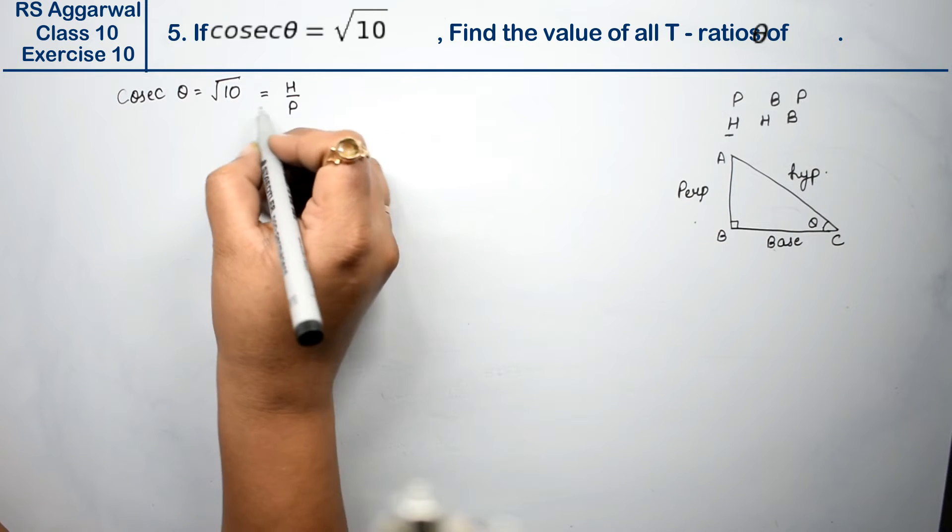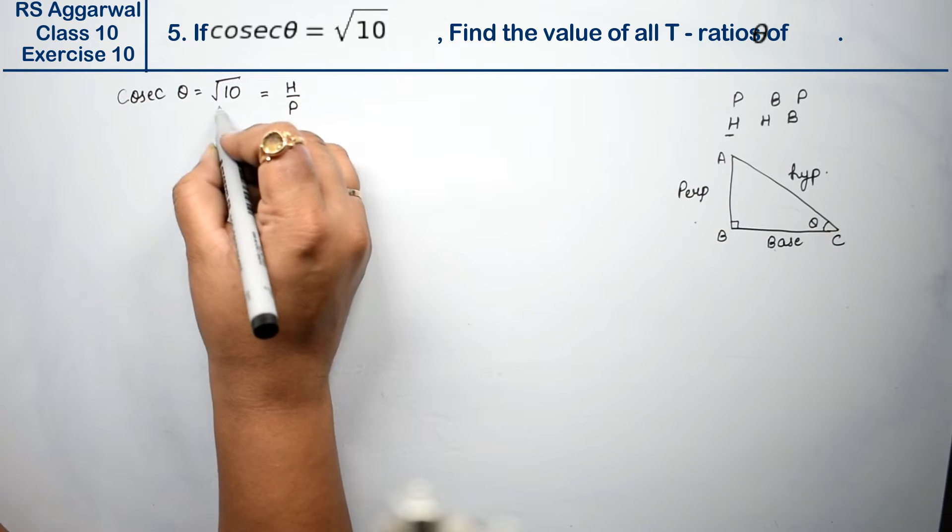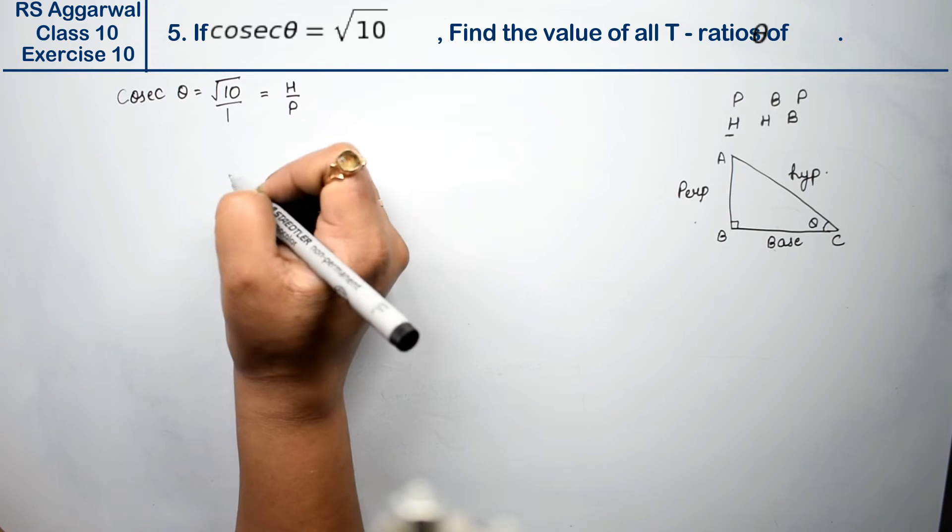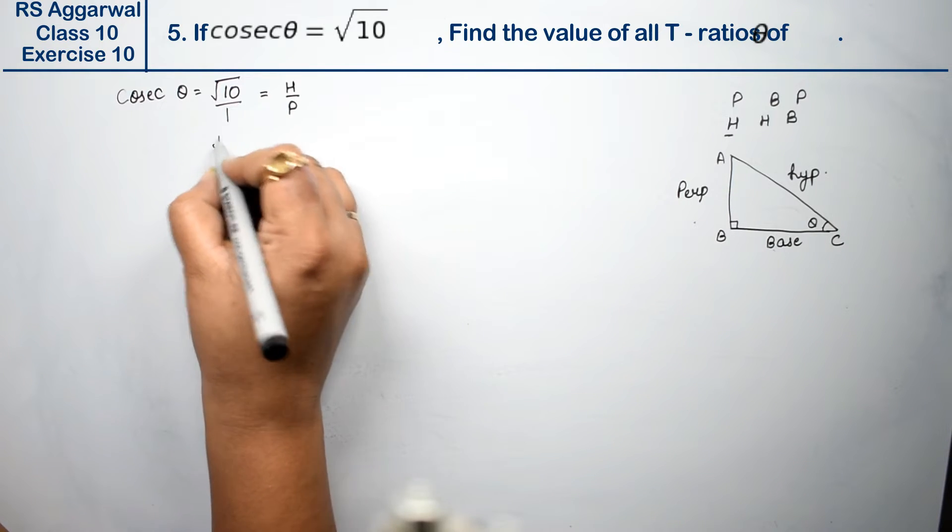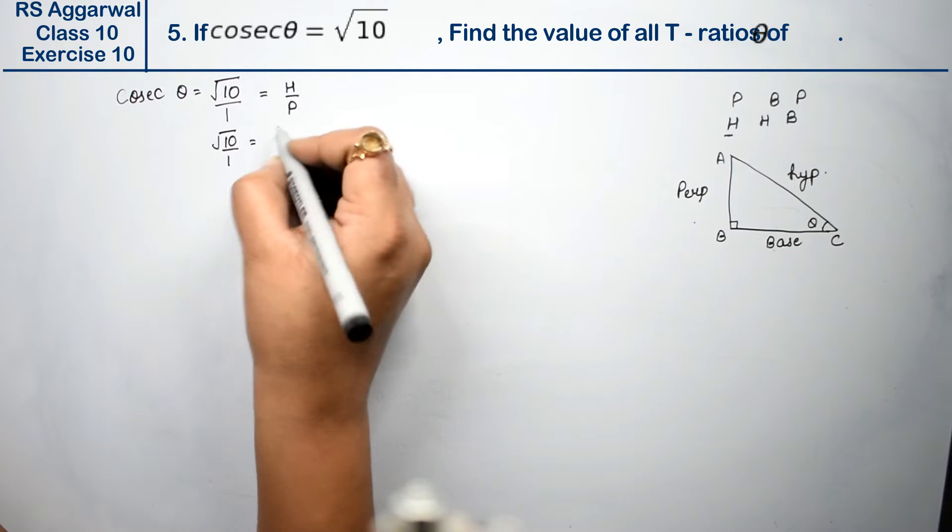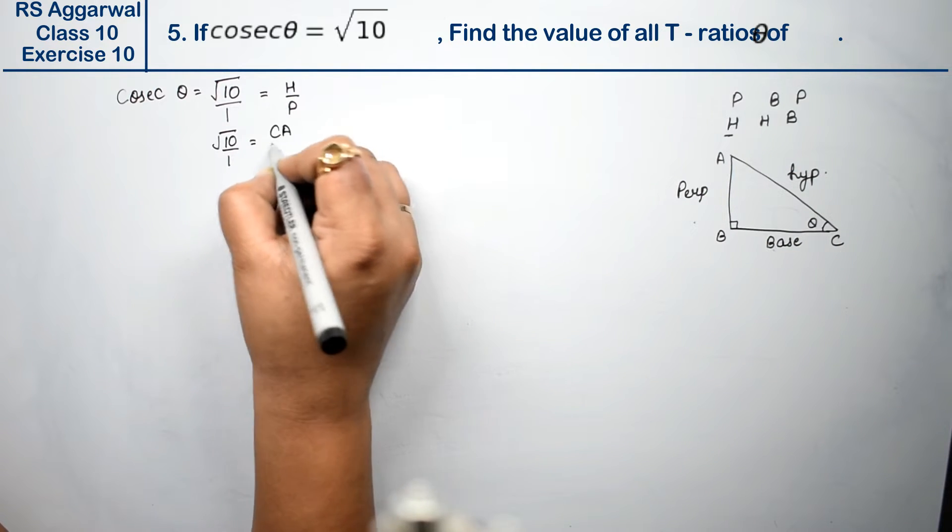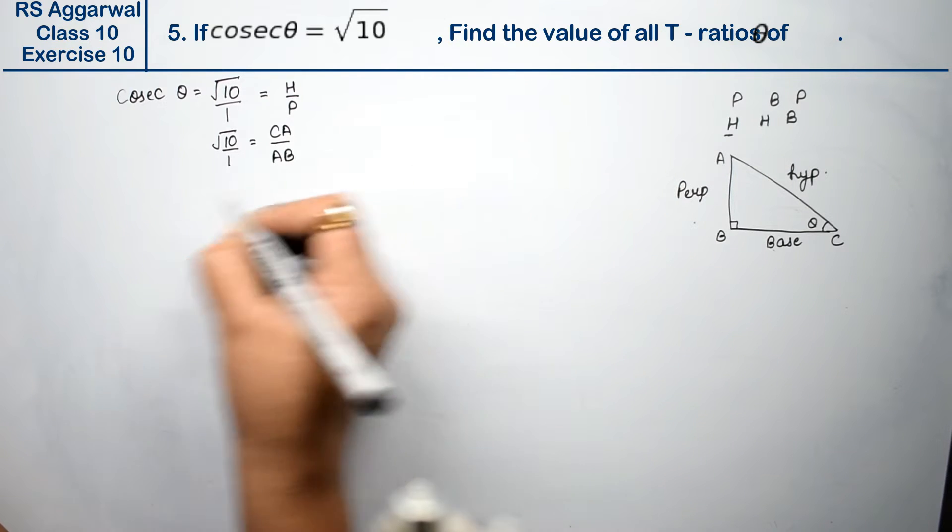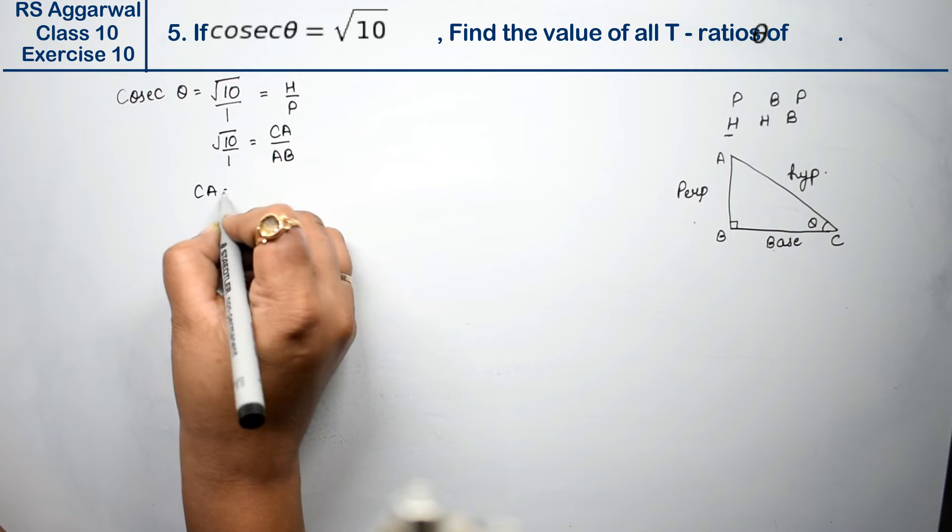Now hypotenuse is given. But there is nothing below root. So what do we write? We write 1. What happened in our hypotenuse? Root 10 upon 1.